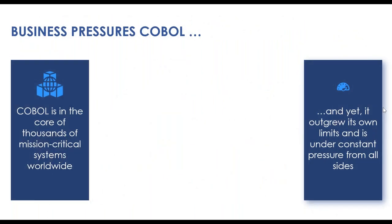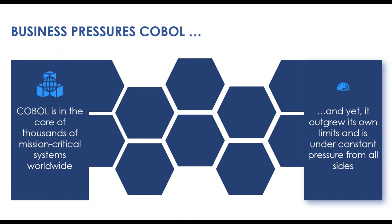COBOL is at the core of thousands of mission-critical systems worldwide and constantly growing, but that creates significant business pressures — the biggest being corrupt data and data loss. COBOL is now handling far more than it was designed for. Systems designed decades ago face concurrency issues: when you have hundreds of concurrent users reading and writing to the same files, data corruption starts to happen, and customers often don't even know which files are corrupted.